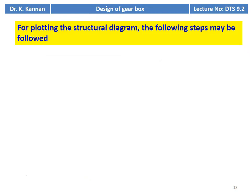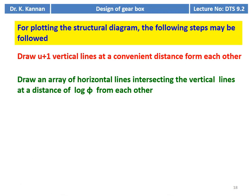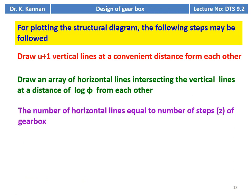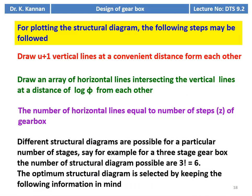For plotting the structural diagram, follow these steps: draw u+1 vertical lines at convenient distances from each other, where u is the number of steps. Then draw an array of horizontal lines intersecting the vertical lines at a distance of log φ from each other, where φ is the progression ratio. The number of horizontal lines equals the number of steps of the gearbox. Different structural diagrams are possible for a particular number of stages — for a 3-stage gearbox, 3 factorial (i.e., 6) structural diagrams are possible.